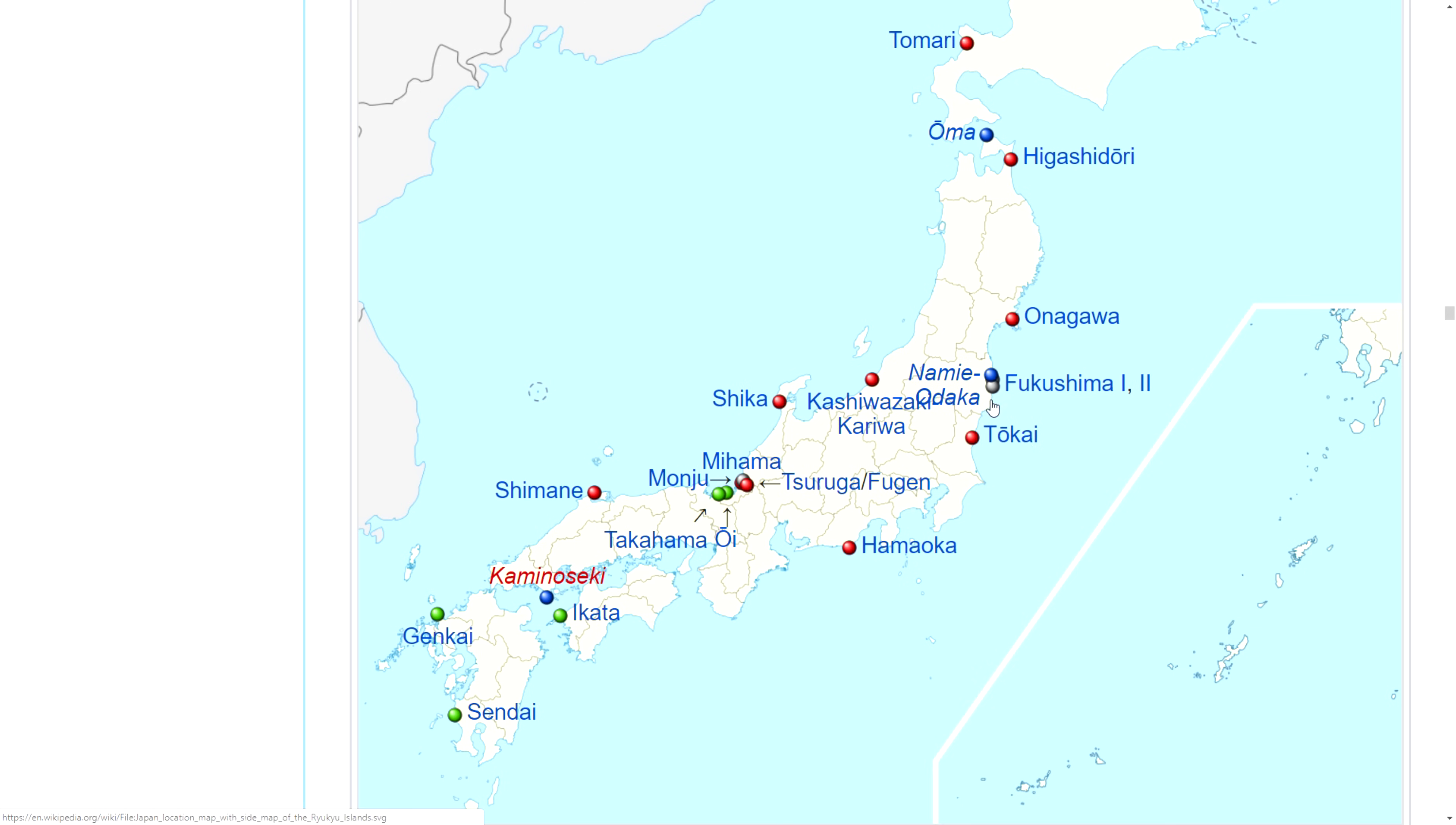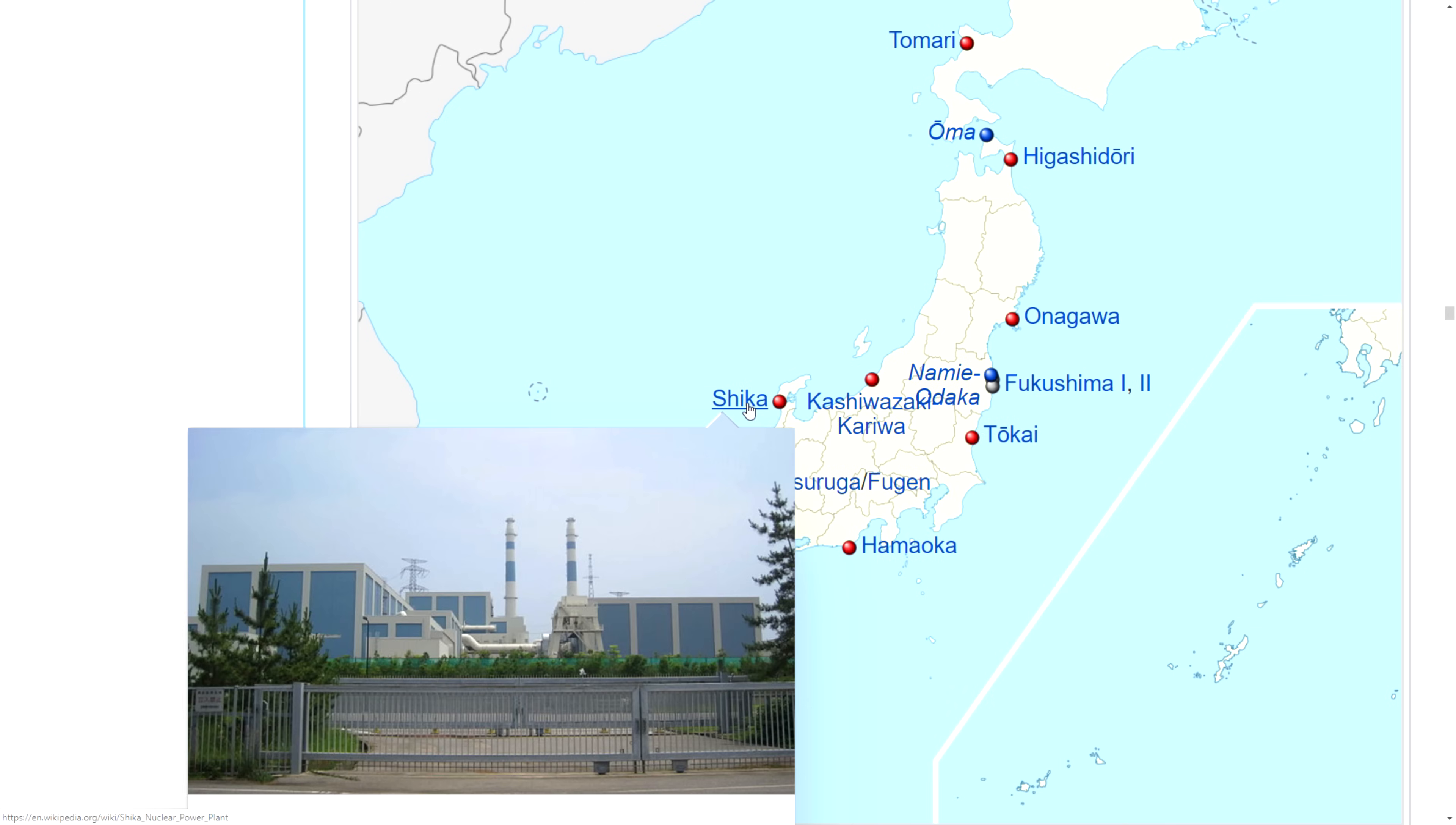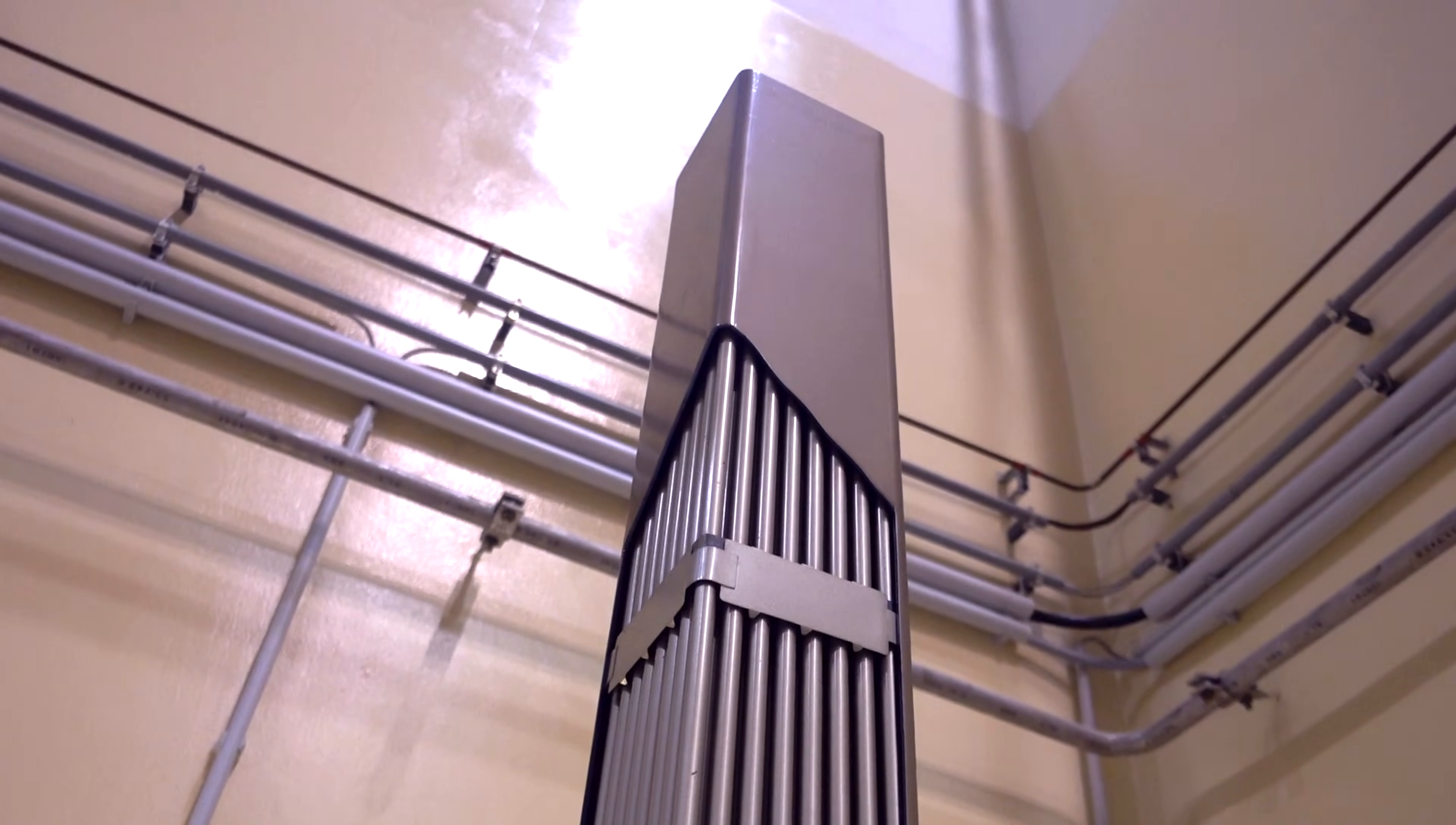After the nuclear disaster, the Japanese government shut down all the power stations in Japan, which reduced demand for zirconium used for constructing nuclear reactors.